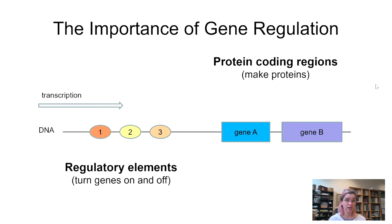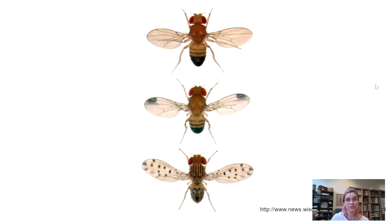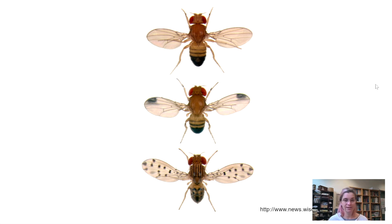A good way to think about regulatory elements is as little DNA sequences upstream of the protein-coding regions. Depending on what the regulatory element codes for, gene A may only be turned on at one particular time in development and then not expressed at all for the rest of your life, or gene B might be turned on simultaneously with gene A in some animals but sequentially in other animals. A neat example of this is in the wings of these flies — notice that the fly at the top has no pigment in its wings, the fly in the middle has a little patch just at the wingtips, and the fly at the bottom has polka dots. The same exact gene is responsible for the pigmentation pattern in all three flies — the only thing that differs is the regulatory element that turns that gene on and off.